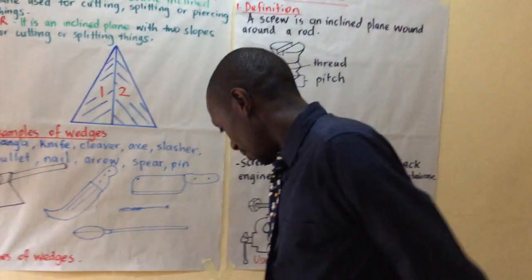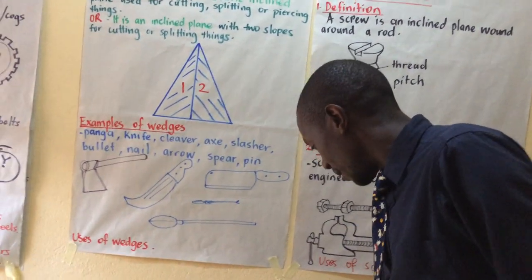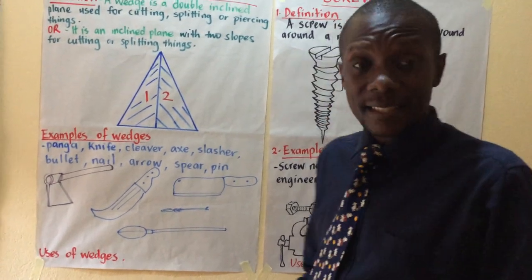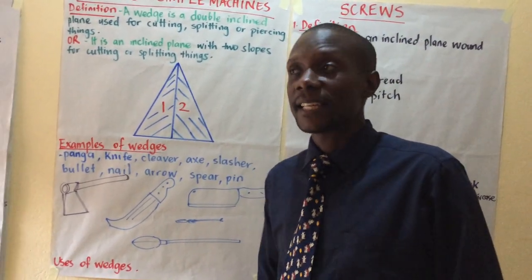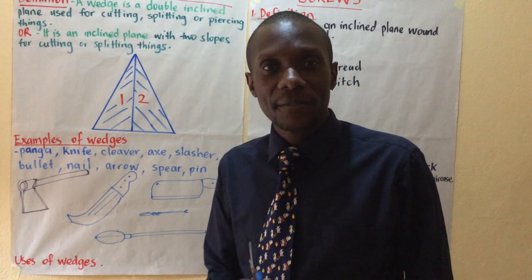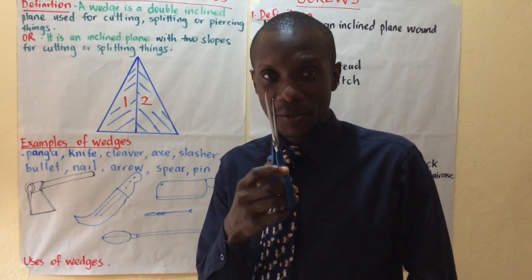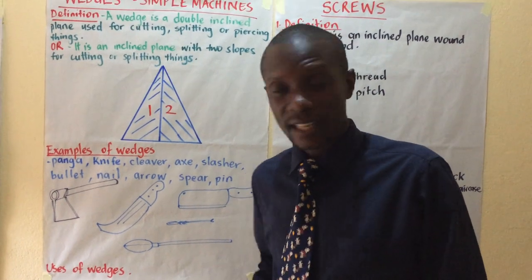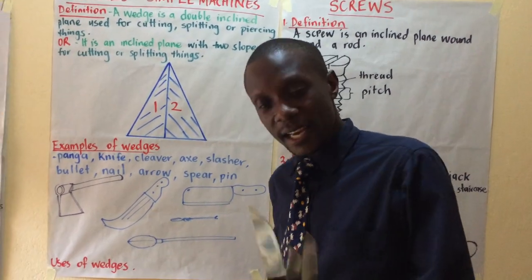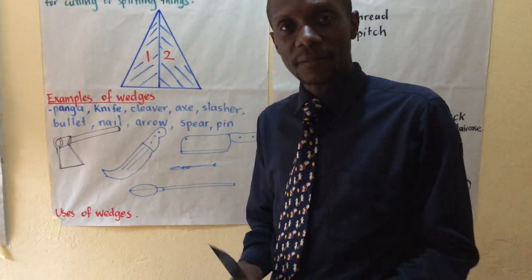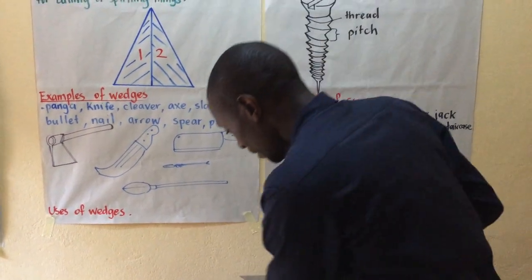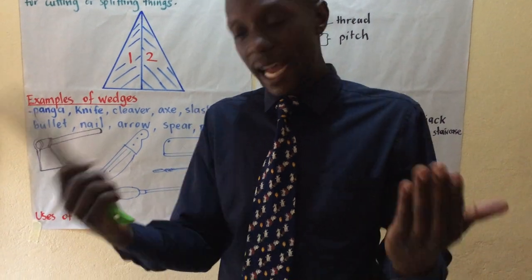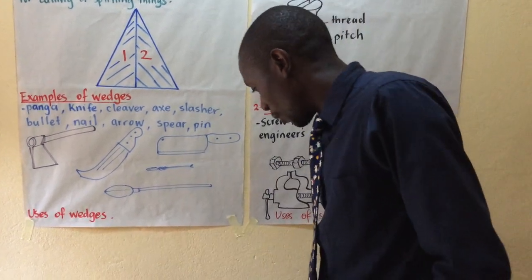Let me begin by showing you some of the wedges I brought. A pair of scissors is both a lever and a wedge — it's a wedge because it is used for cutting things, a double inclined plane for cutting. I have different kinds of knives here. This knife is used for cutting things; it can be used for peeling food and doing a lot of other work.